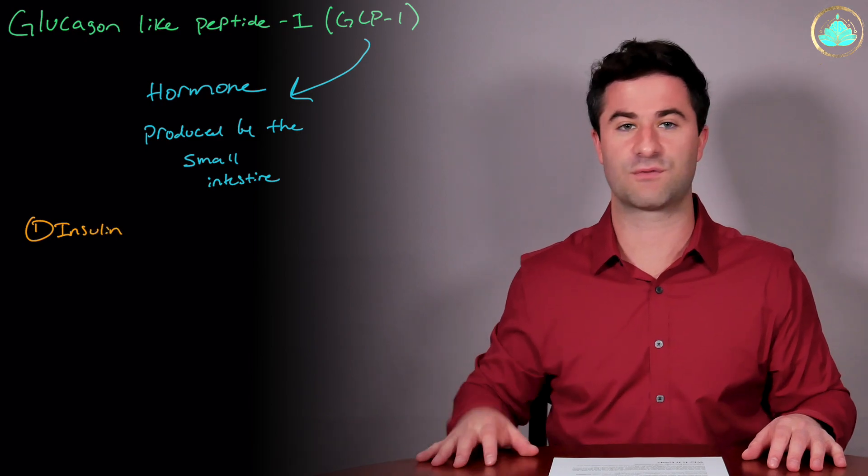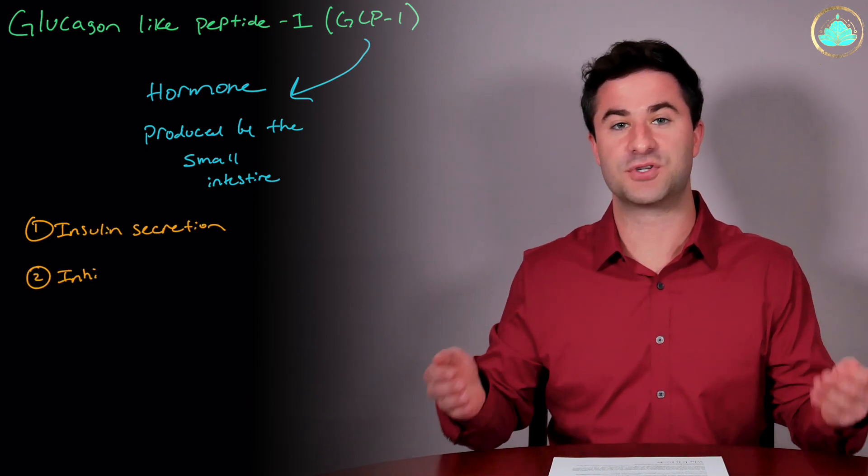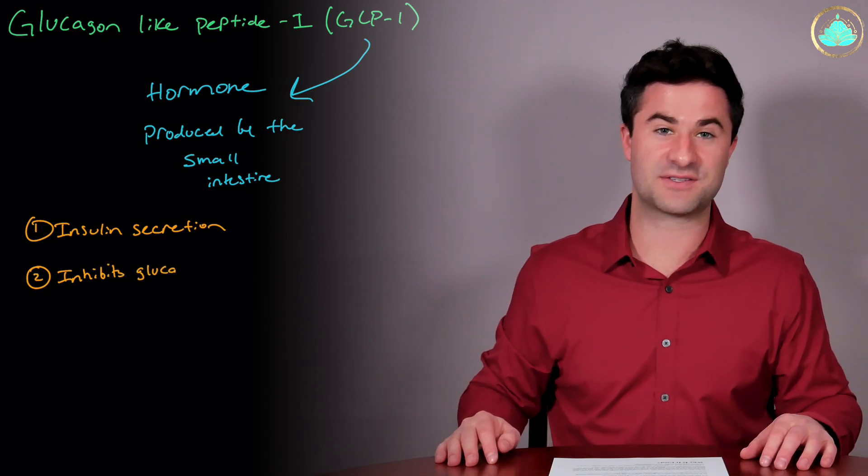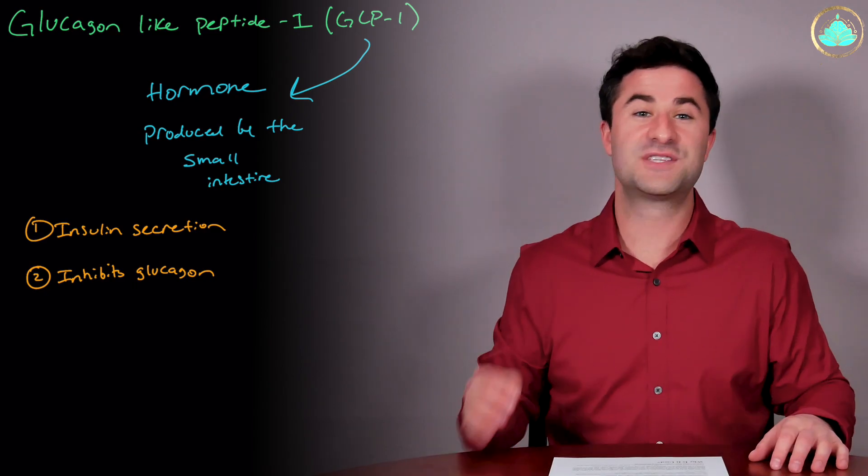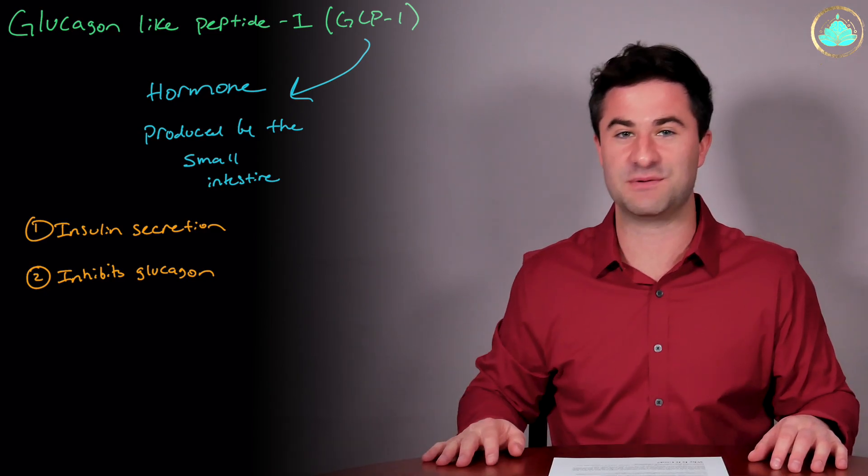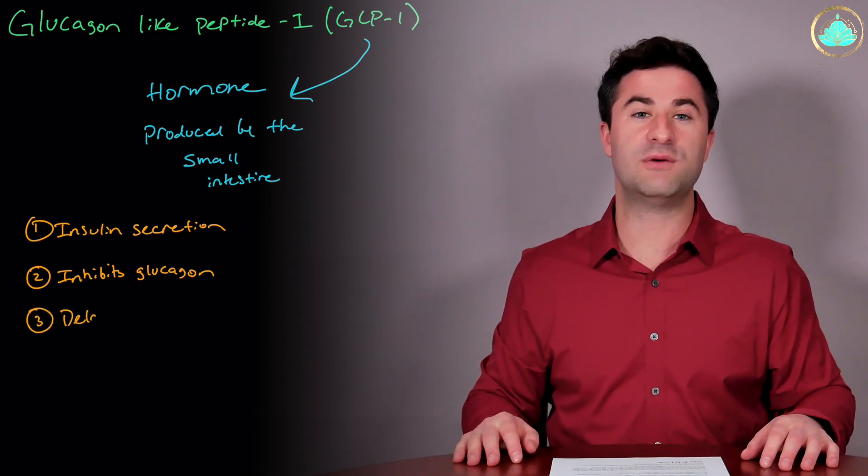Now GLP-1 has a variety of different roles, such as insulin secretion, which allows cells to take up sugar, and inhibits glucagon secretion in order to lower overall levels of blood glucose. Hence why this is a medication used for type 2 diabetes, where excess sugar is a big problem.